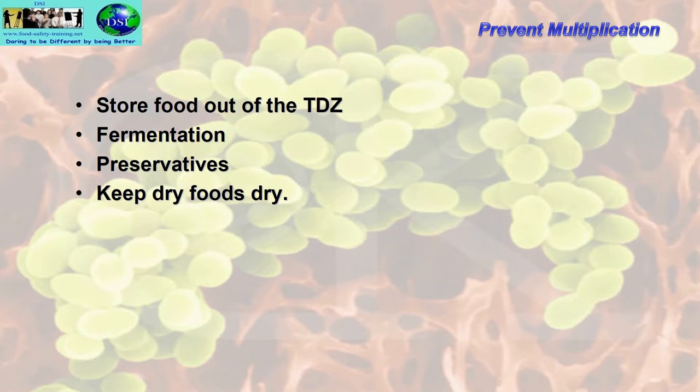To prevent multiplication, store food out of the temperature danger zone, which is between 5 and 63 degrees C. Fermentation reduces the pH to make food more acidic so bacteria won't grow. Preservatives — natural ones are preferred, though others such as nitrates, nitrites, potassium sorbate and sodium benzoate are still used. Keep dry foods dry — denying bacteria moisture prevents their growth.